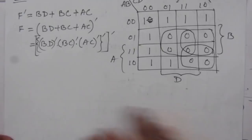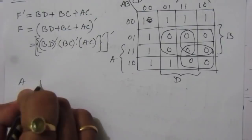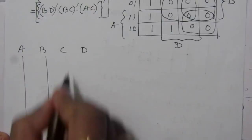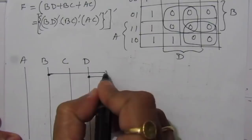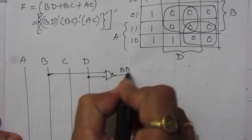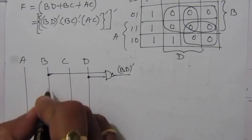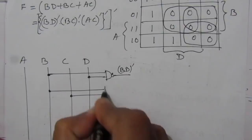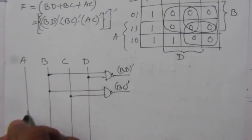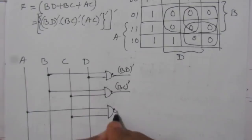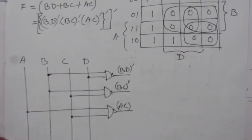Let us draw the input lines for A, B, C, D. For the first term, we take B and D into a NAND gate and get BD̄ at the output. Then we take B and C into a NAND gate and get BC̄ at the output. Then we take A and C into a NAND gate and get AC̄ at the output.